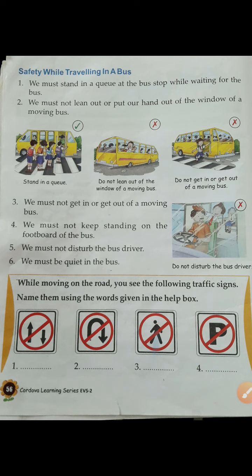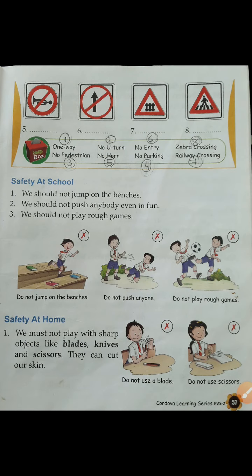While moving on the road, you will see the following traffic signs. Number one: One Way. Number two: No U-Turn. Number three: No Pedestrian. Number four: No Parking. Number five: No Horn. Number six: No Entry. Number seven: Railway Crossing. Number eight: Zebra Crossing.